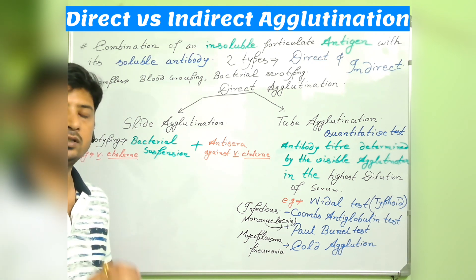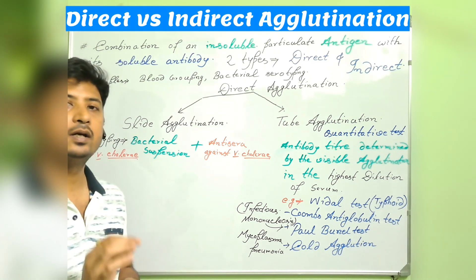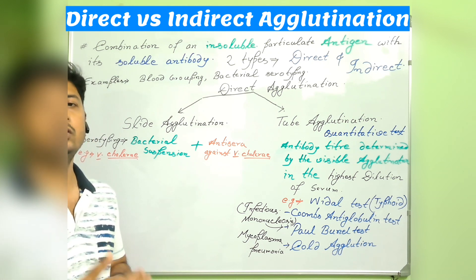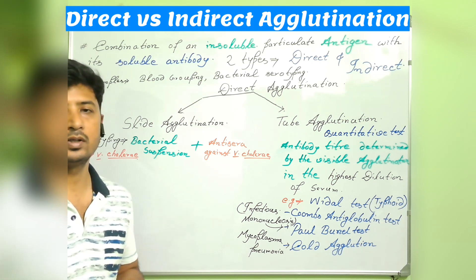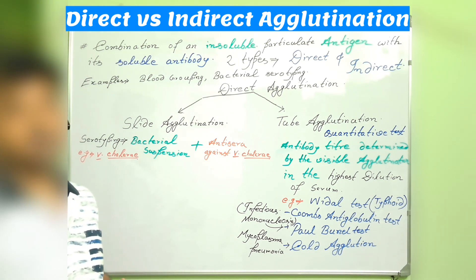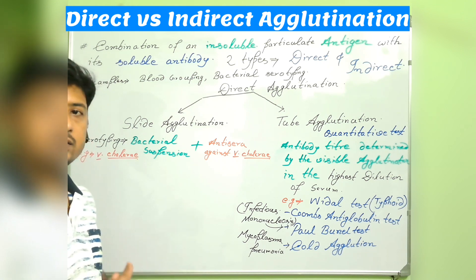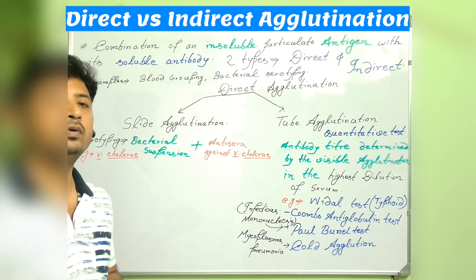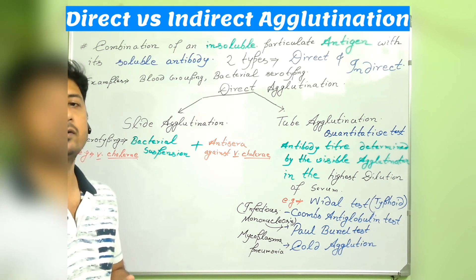You apply one loop full of bacterial suspension on a clean grease-free slide, then apply one drop of the antisera you want to confirm — or four to five types of antisera you are suspecting for the particular case. A visible clumping will be observed in a positive slide agglutination test, whereas in a negative result there will be no visible agglutination and the sample will appear as a hazy milky solution.